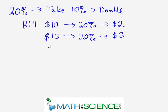Now, what if I have a bill that's $22, and I want to do a 20% tip? Well, first I calculate 10%. So I move the decimal. 10% is $2.20. If I double that, it's going to be $4.40.